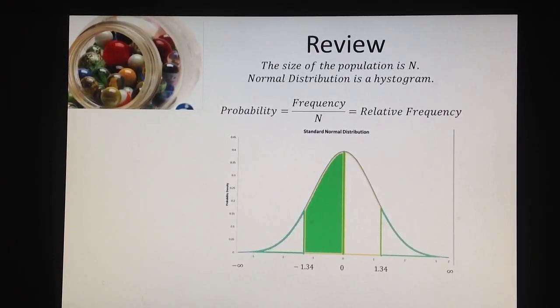For example, if the distribution is normal and my two z values are negative 1.34 and 0, then one probability problem would be this. What is the probability that if I randomly select an individual from a population with size n, this individual will have z-score between z1 and z2? This probability is given with the green area under the curve.